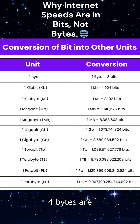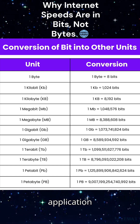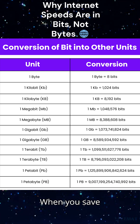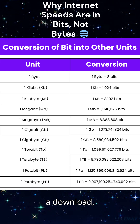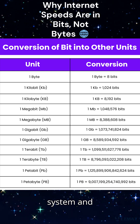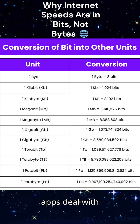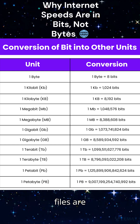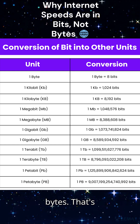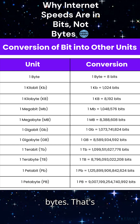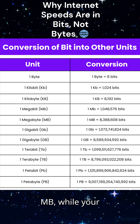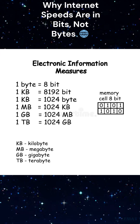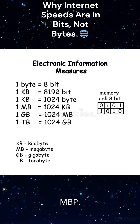Reason 4: Bytes are application-level units. When you save a file or view a download, your operating system and apps deal with bytes, because files are structured in bytes. That's why your download manager shows MB/s, while your ISP sells you Mbps.